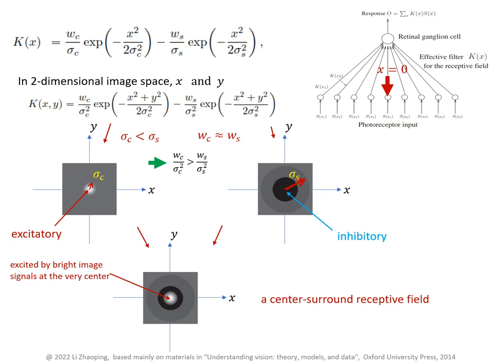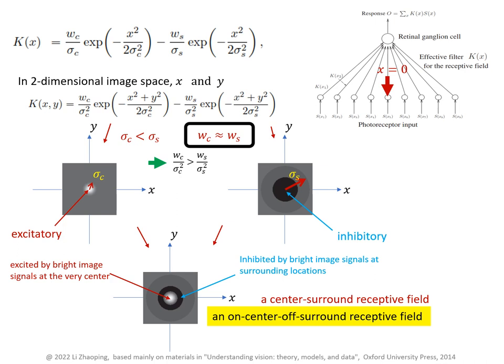So this neuron can be excited by bright image signals at the center but is inhibited by bright image signals away from the very center, but can be excited by dark image signals at those surrounding image locations instead. So this is also called an on-center off-surround receptive field.